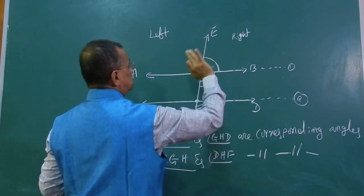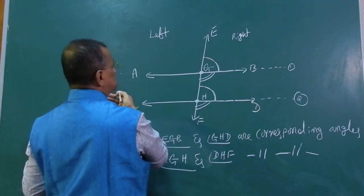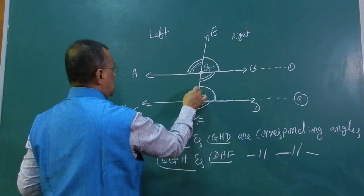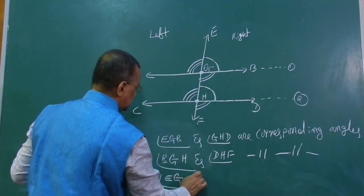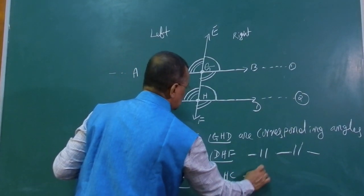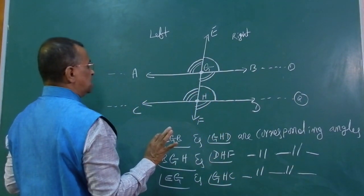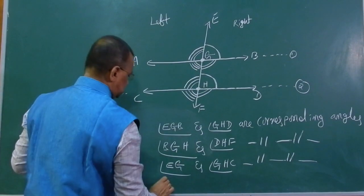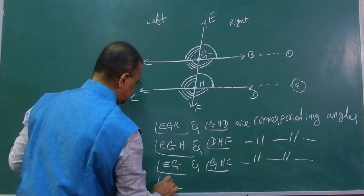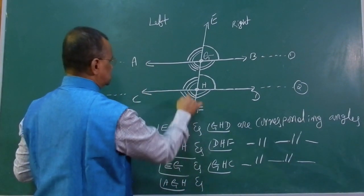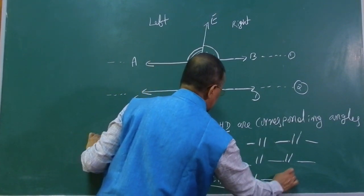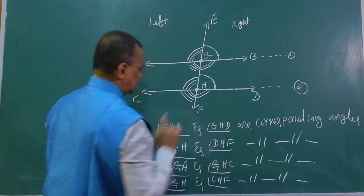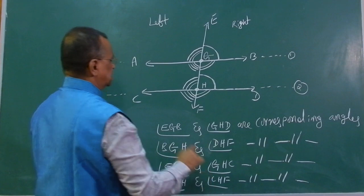These are corresponding angles present on the right side of the transversal line. Similarly, on the left side of the transversal line, angle EGA and angle GHC are also corresponding angles. The last corresponding angles are below the first line and below the second line on the left side: angle AGH and angle CHF are also corresponding angles.